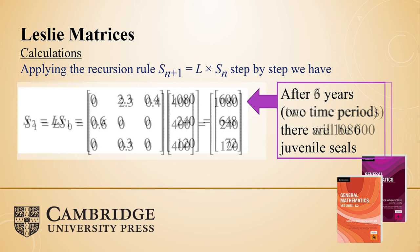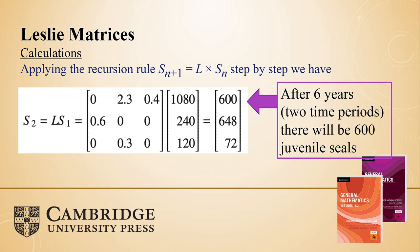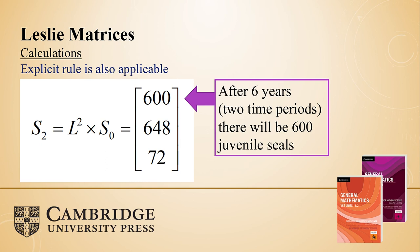For two time periods in the future, using the recurrence relation: take S₁ — the matrix with 1080 juvenile seals — apply that Leslie matrix, multiply it to S₁, and we get the new number of juvenile seals and all the rest for the second time period. After two time periods, when n equals two, that's actually six years in the future that we're predicting. Just like with transition matrices, the explicit rule is still at play: taking that Leslie matrix raised to the power of two and multiplying it to the initial state matrix gives the same value.